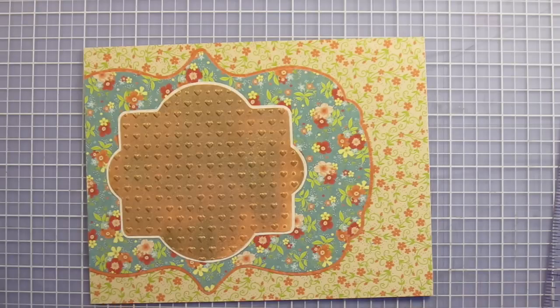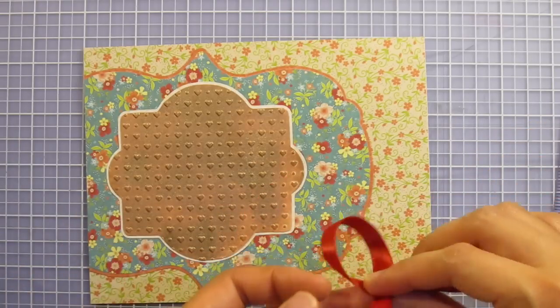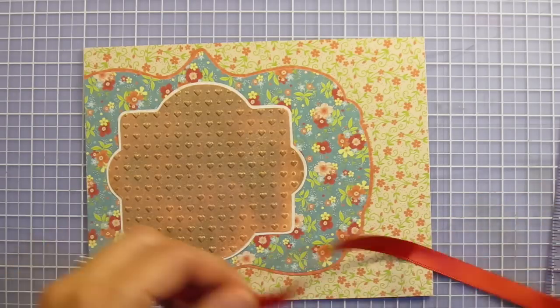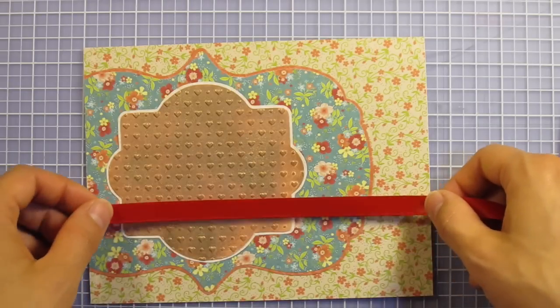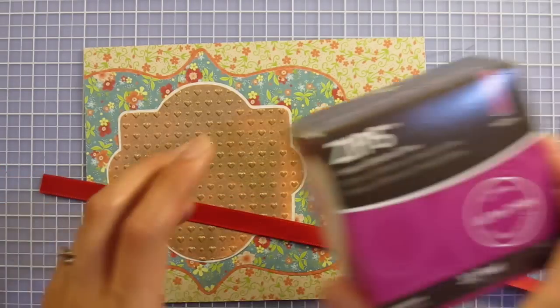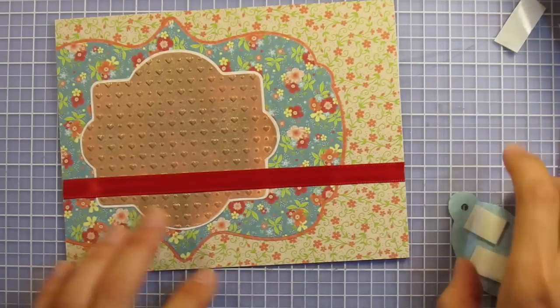Before I put the rest of the pieces on, I want to add some ribbon. I've got this red satin ribbon coming from the eggnog ribbon set, if you want to search that on Paper Wishes. I'm going to glue it right here using my ultra thin zots.